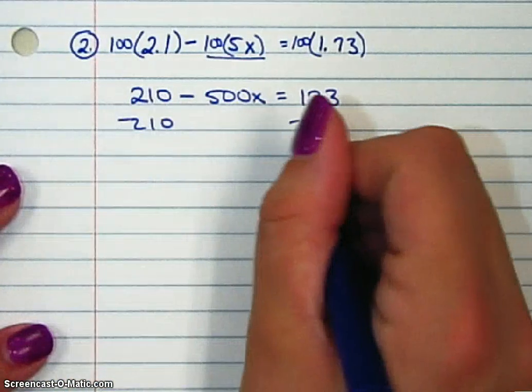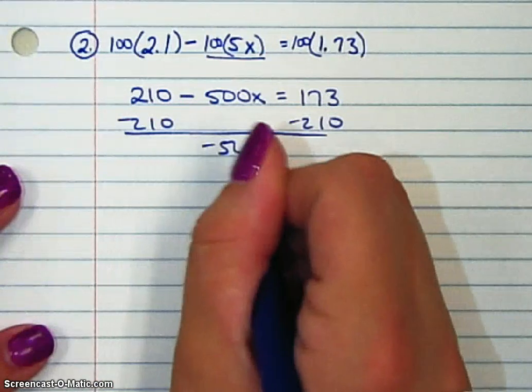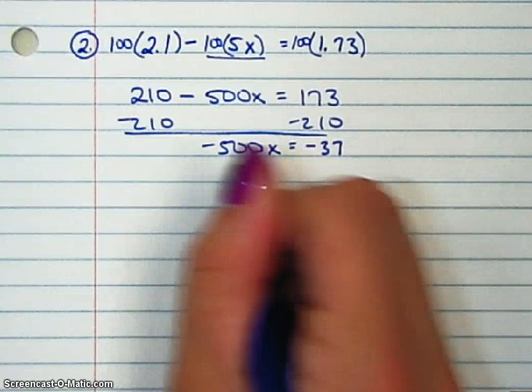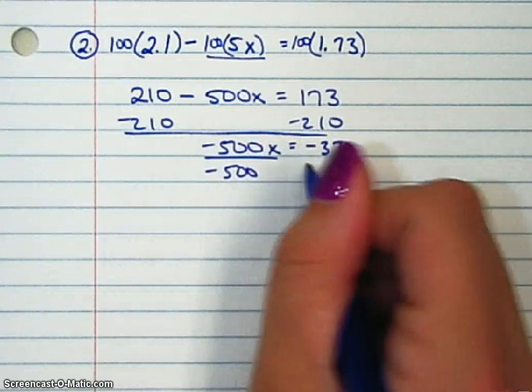Then, subtract 210 from both sides. This gives us negative 500x equals negative 37, and divide by negative 500.